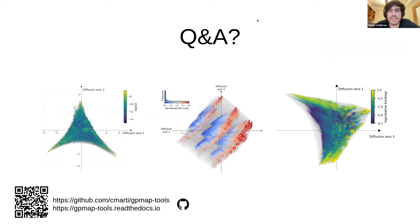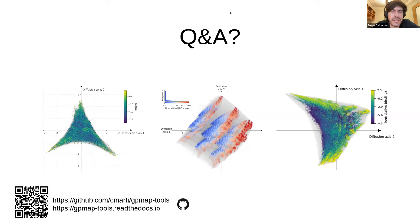Thank you so much, Carlos, for that really wonderful presentation. Time is a little tight for questions, but I just wanted to ask one quick one. I really liked how you analyzed the experimental fitness landscape alongside population variation in E. coli. Have you tried something similar with human-based MAV data?